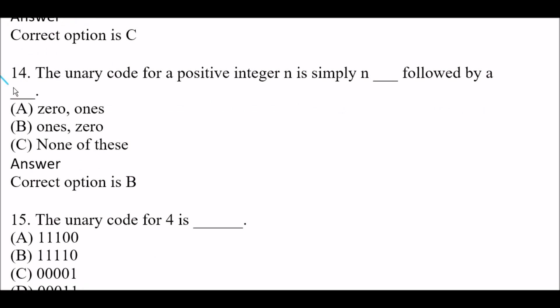Next question: The unary code for a positive integer N is simply N blank followed by a blank. Option A: 0 and 1 respectively. Option B: 1 and 0 respectively. Option C: none of these. The right answer is Option B, 1 and 0. Important question — the unary code for a positive integer N is simply N ones followed by a 0.